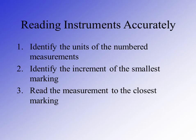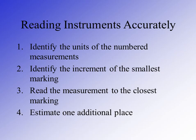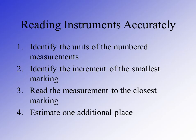Once you've determined the increment, read your measurement to the closest marking. Inevitably, you will have instances where your measurement falls in between two markings, so it becomes necessary to estimate how far past that mark your measurement actually is. This results in the last digit of your measurement being an estimated value. The rest are measured with certainty, but the last decimal place is always an estimate — you always estimate one additional place.